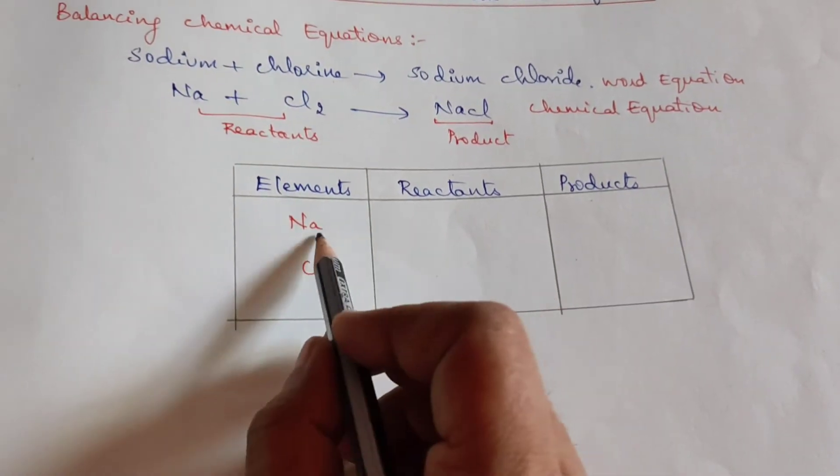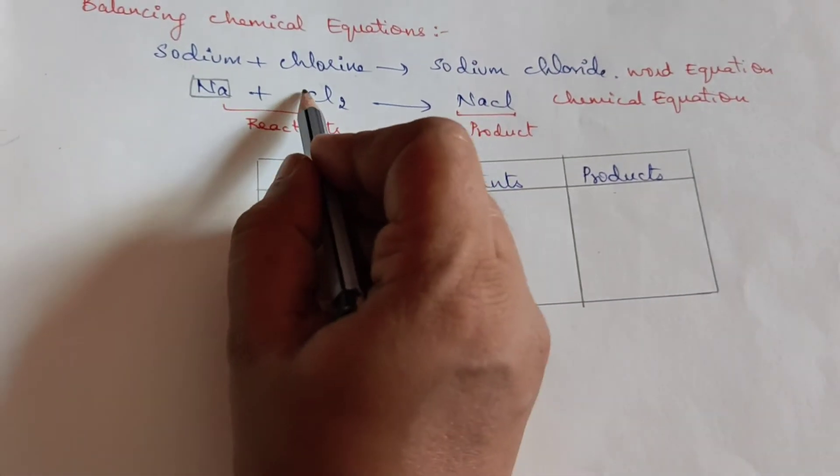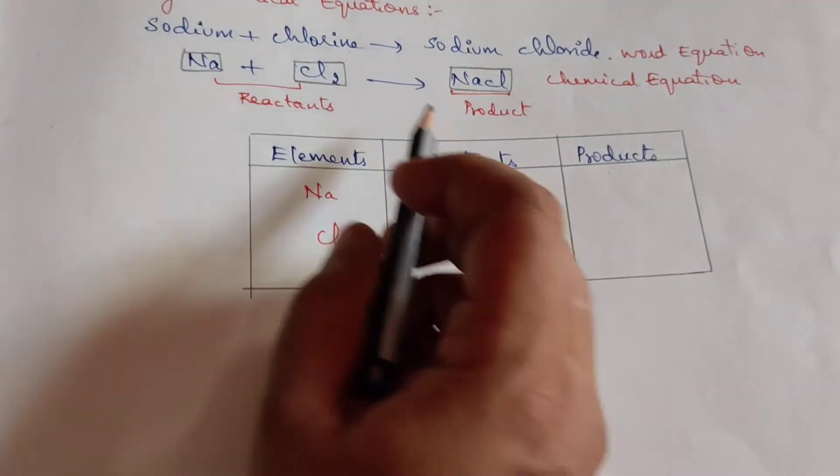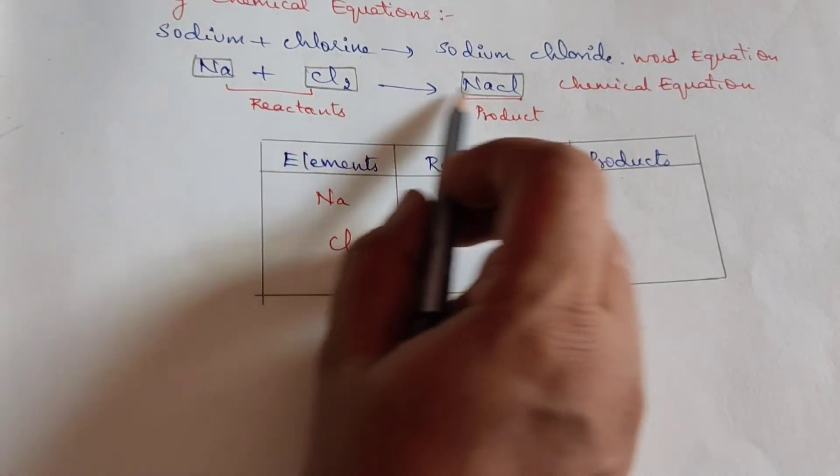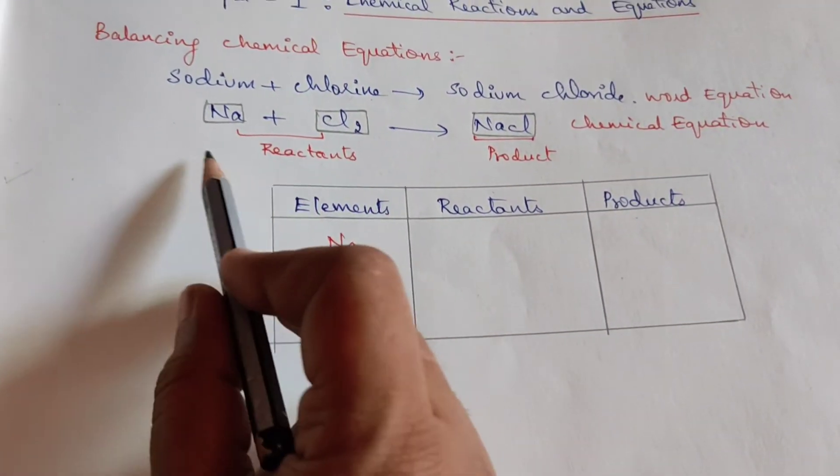Now let us start doing sodium. This is a formula, children. This is a formula of the element, this is a formula of a compound which cannot change. Hence we are not going to make any changes to this. Instead, if there is any change, we are going to add it in the front.